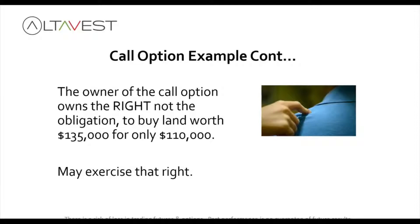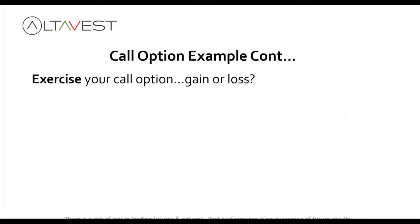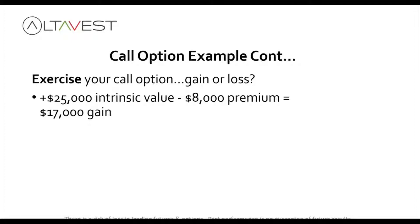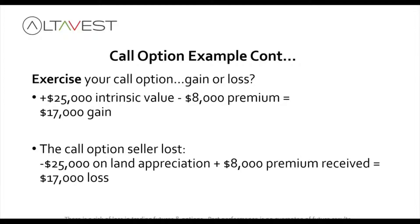At that point you might tap the shoulder of the person who sold you that option and exercise your right to buy at $110,000. Is that a gain or a loss? There's $25,000 of intrinsic value minus the $8,000 in premium that you paid, so that would be a $17,000 gain. Now, the option seller's gain is the buyer's loss — they missed out on $25,000 in land appreciation but did receive the $8,000 premium, equaling a $17,000 loss.